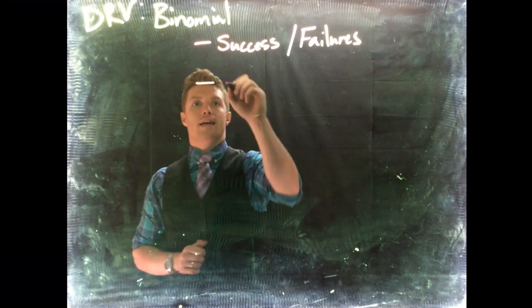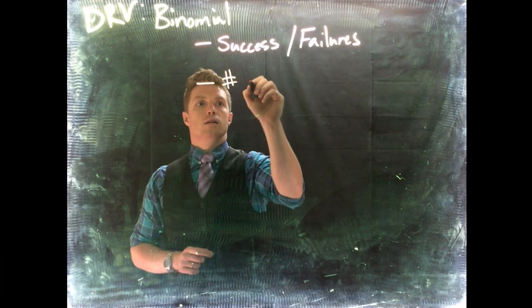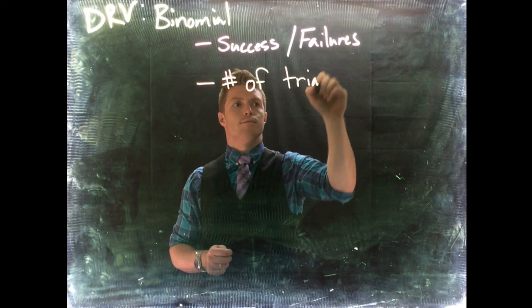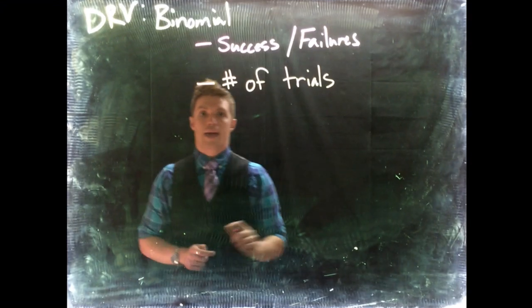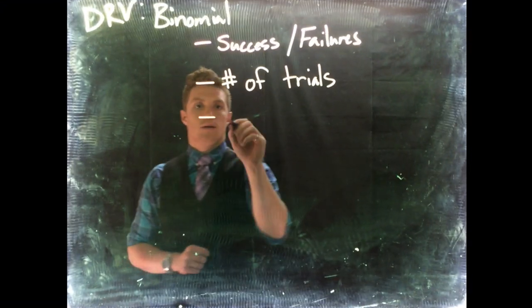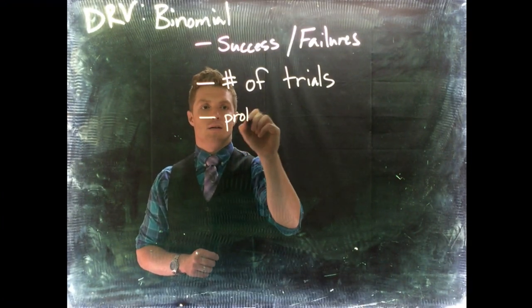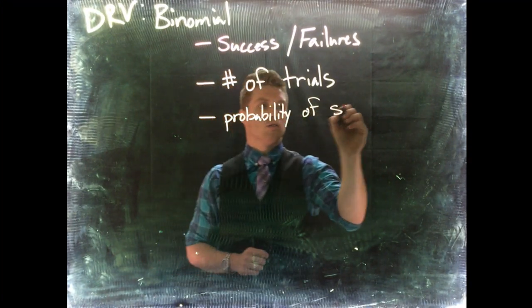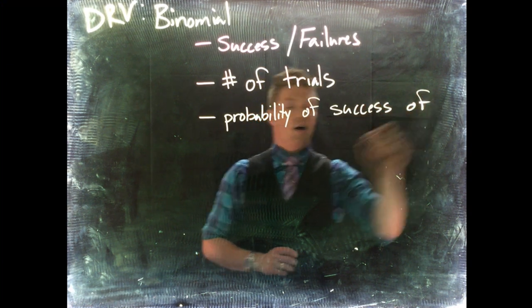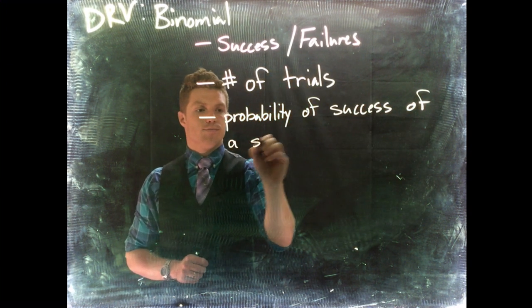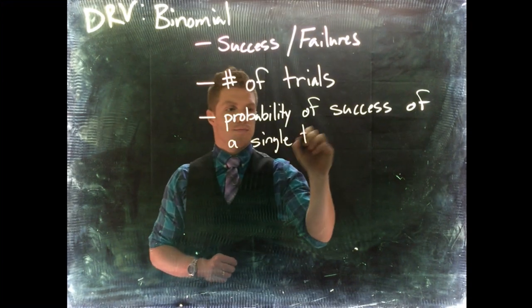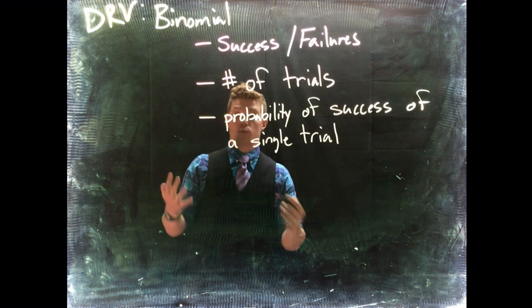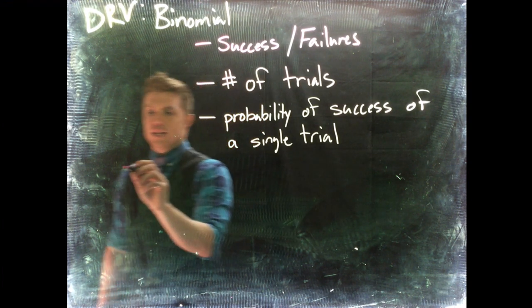Then we need a number of outcomes or a number of trials. How many times are we going to go through it? And we need to know the probability of success of a single trial. So when we were, if we were to actually write this out, we would need something like this.